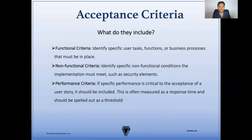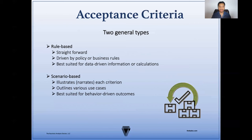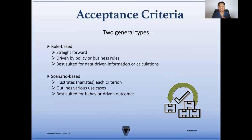What does acceptance criteria include? You should typically have functional criteria, non-functional criteria, and performance criteria. Functional criteria identifies specific user tasks, functions, or business processes that must be in place. Non-functional criteria identifies the specific non-functional conditions the implementation must meet, such as security elements. And for performance criteria, if specific performance is critical to the acceptance of the user story, it should be included as well. This is often measured as a response time and could be spelled out as a threshold. There are generally two types of acceptance criteria: rule-based and scenario-based.